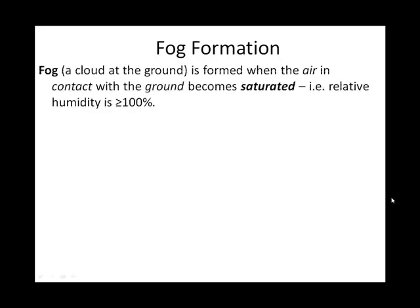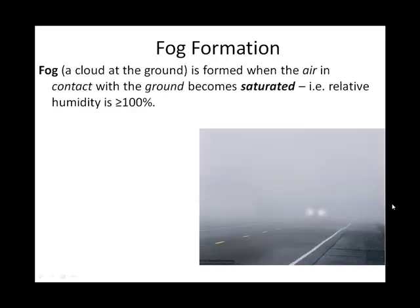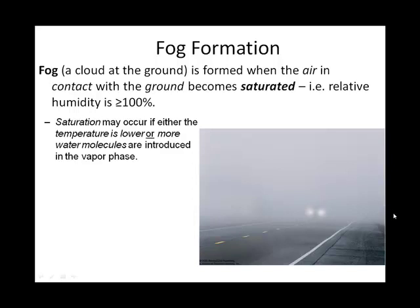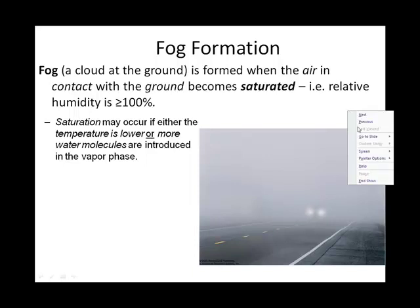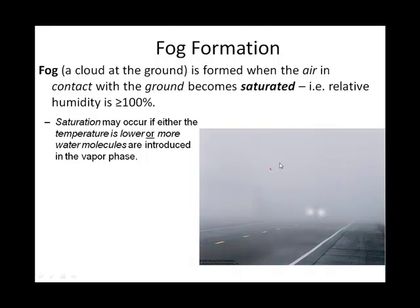Fog can simply be considered a cloud at ground level. It is most similar to a stratus cloud — a low-level, flat cloud that forms in a stable environment. In order to result in fog, the air has to be saturated, meaning we have to reach 100% relative humidity. Whenever you see fog, you can think of little liquid water droplets suspended in the air.